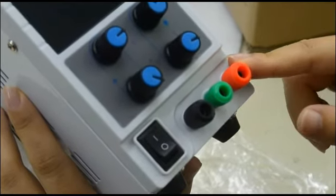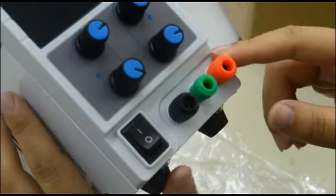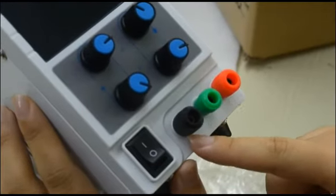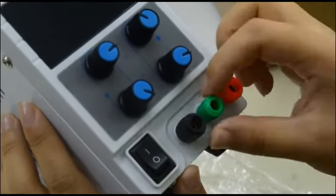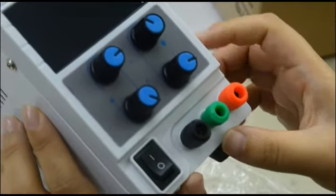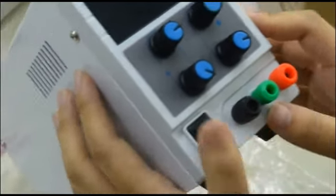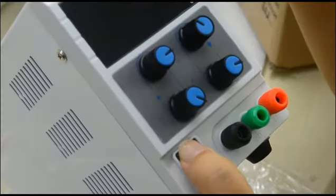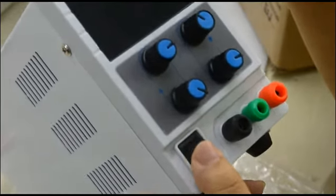The red one is the positive pole and the black one is the negative pole. The green one is ground connected. Here is the switch for power on and off.